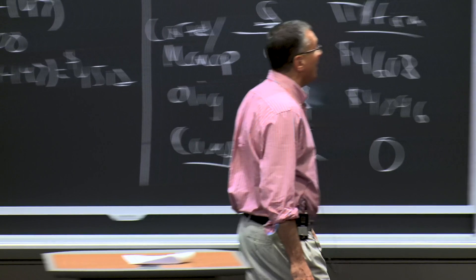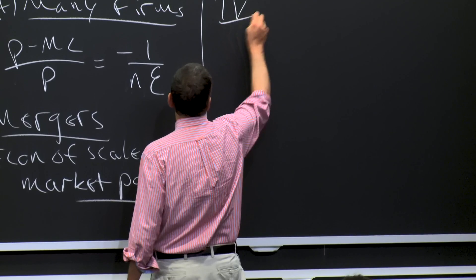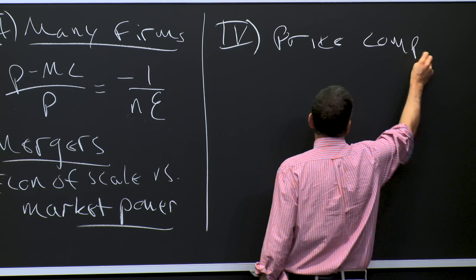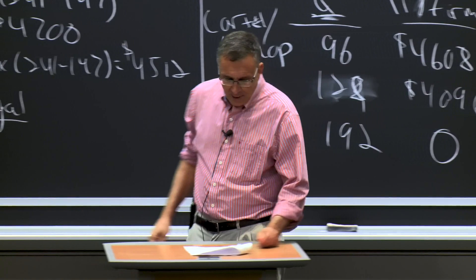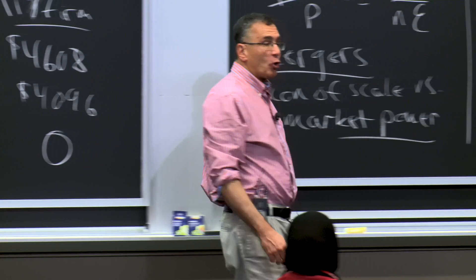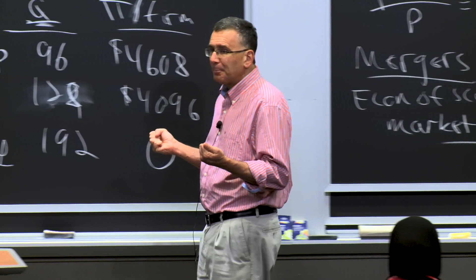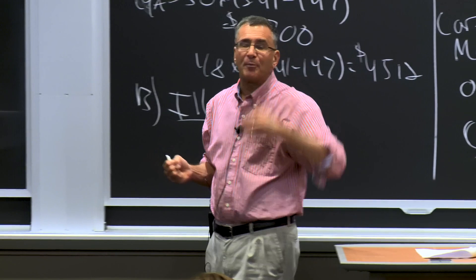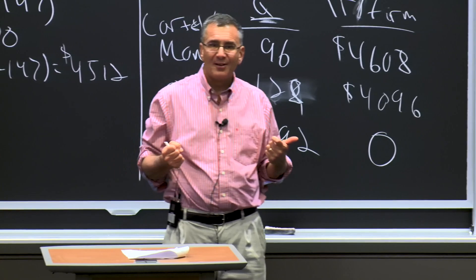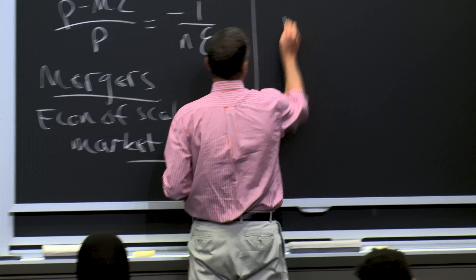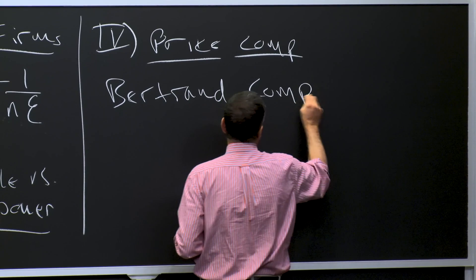Now let's go to the last topic I want to cover today, which is price competition. The models we've been discussing so far have been quantity competition — United and American compete on how many flights to send, and then the demand curve tells them what they can charge. But in many markets, that's not how firms compete — they compete on price. That's a different model named after another French economist: Bertrand competition — a model of price competition.